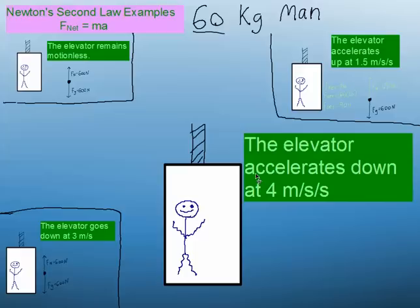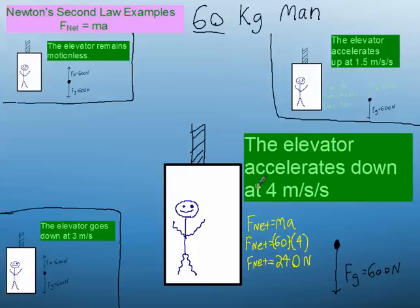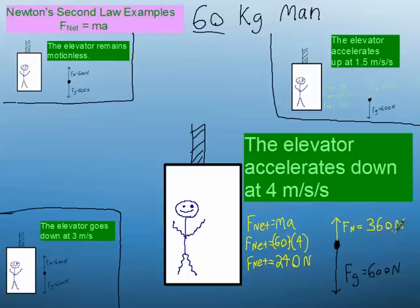This next case says the elevator accelerates down at 4 meters per second squared. As you've probably felt, when the elevator suddenly starts going down, you feel lighter. Using Newton's second law, the net force on the man is 240 Newtons. In this case, that net force is pointing down, which means the normal force has to be 240 Newtons weaker than the force of gravity. So you get a normal force of 360 Newtons — the guy doesn't feel as heavy anymore.